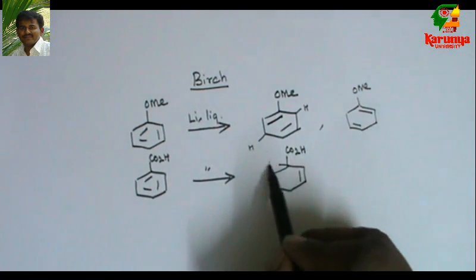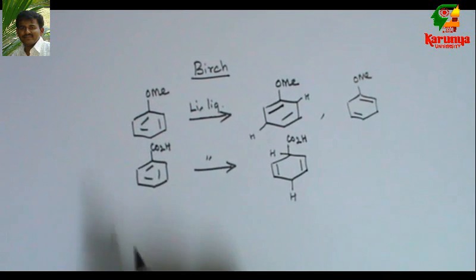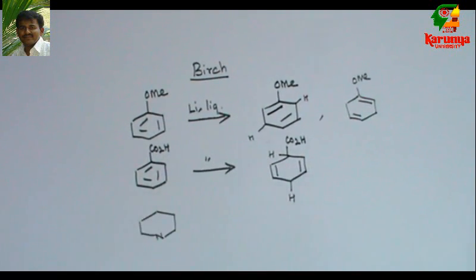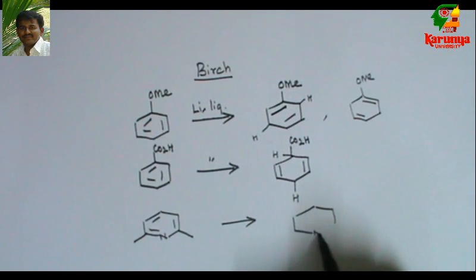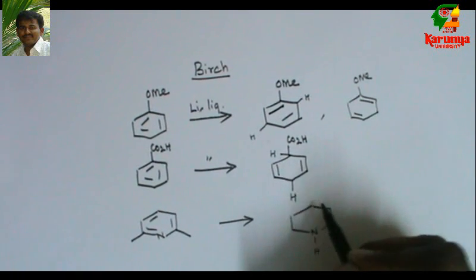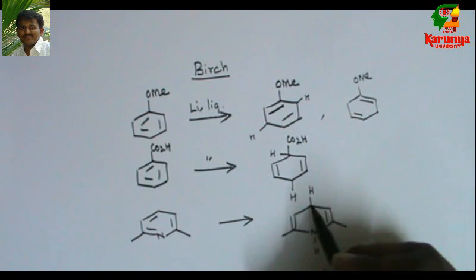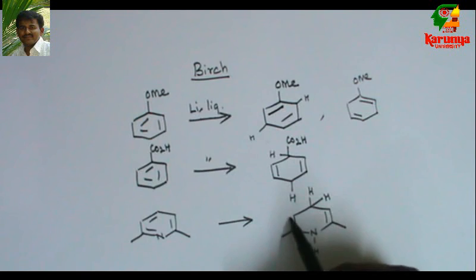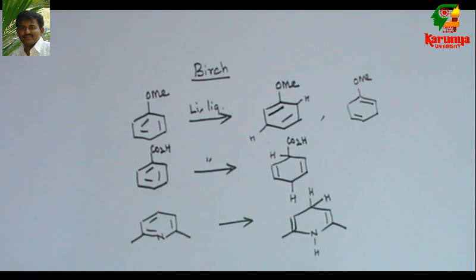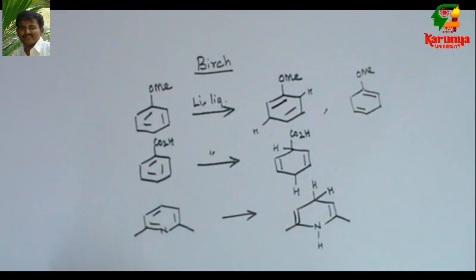With an electron-withdrawing group, hydrogen adds here and here. Now, what about pyridine? In our case, the nitrogen acts like an electron-withdrawing group, so hydrogen will add here and at the fourth carbon. We get a compound which is an enamine. The selectivity in pyridine is very important: since it is an enamine, it can react with electrophiles.